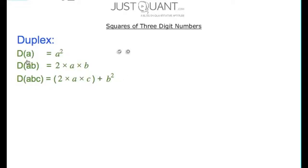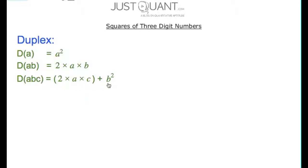For a single-digit number, say A, the duplex of A is A squared. For a number with two digits, say A, B, the duplex of A, B is 2 times A multiplied by B. We have used these two duplexes to calculate the squares of two-digit numbers. Now, to calculate the squares of three-digit numbers, we also need to find the duplex of three digits, say A, B, C, which is 2 times A times C added to B squared.